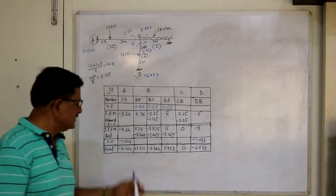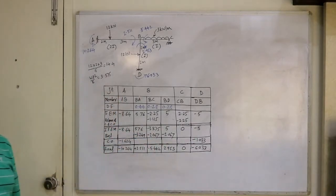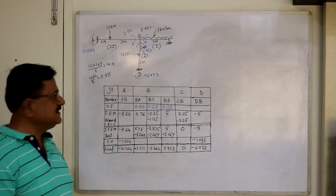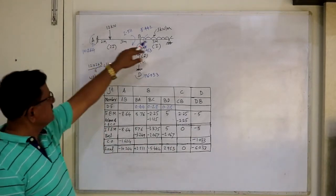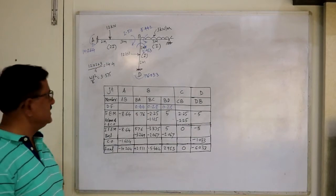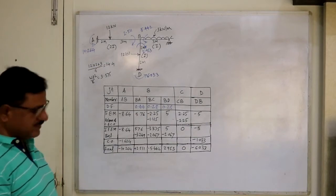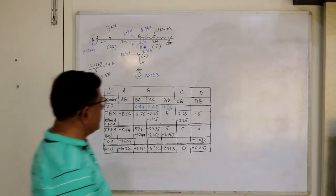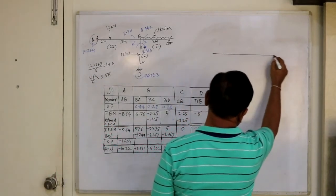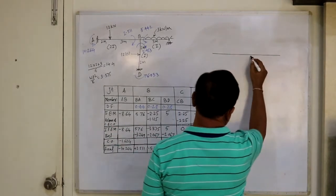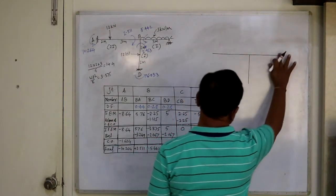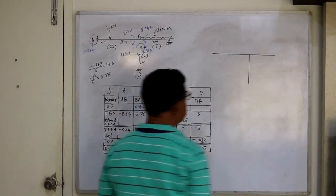Let's continue the same problem. In the previous problem we calculated final end moments and entered these moments in the frame according to their signs — clockwise or anti-clockwise at the ends. Now we have to construct the bending moment diagram. Let us take this frame as a reference line to construct the BMD.